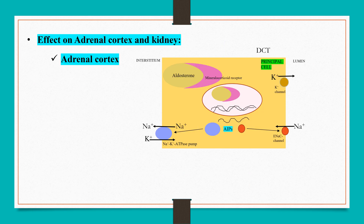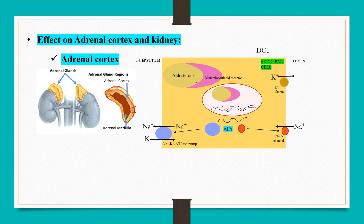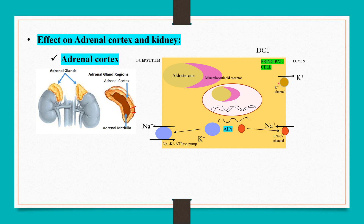Effect on the adrenal cortex: angiotensin 2 increases aldosterone secretion from the adrenal cortex. Aldosterone then binds with mineralocorticoid receptors present on principal cells of the distal convoluted tubule and increases production of aldosterone-induced proteins. These proteins act on the sodium-potassium ATPase pump and epithelial sodium channels, increasing sodium reabsorption from the lumen into the principal cells and into the interstitium. In exchange, potassium ions are secreted into the lumen, with the end result being increased sodium reabsorption and potassium excretion.